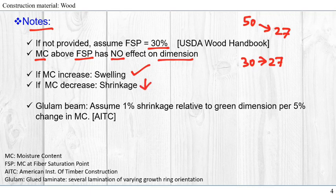For glulam beam, we have to assume 1% shrinkage relative to green dimension per 5% change in moisture content. Green dimension is the wet dimension or the manufactured dimension or the cut down dimension, the first cut that the production made. This is according to American Institution of Timber Construction.